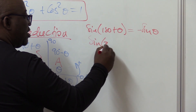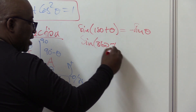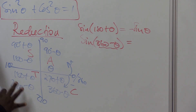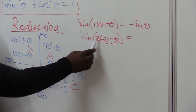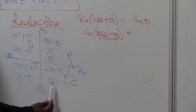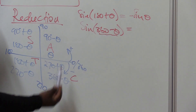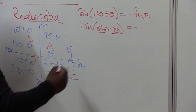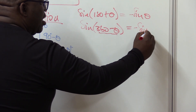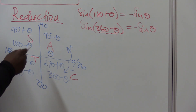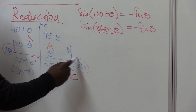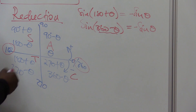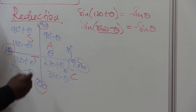For sine of (360 minus theta): 360 minus puts us in the fourth quadrant. Sine is negative in the fourth quadrant, so the answer is negative sine theta. Notice that when you deal with 180 and 360 degrees, the ratio does not change - it stays sine. But when it comes to 90 degrees and 270, the ratio will change.